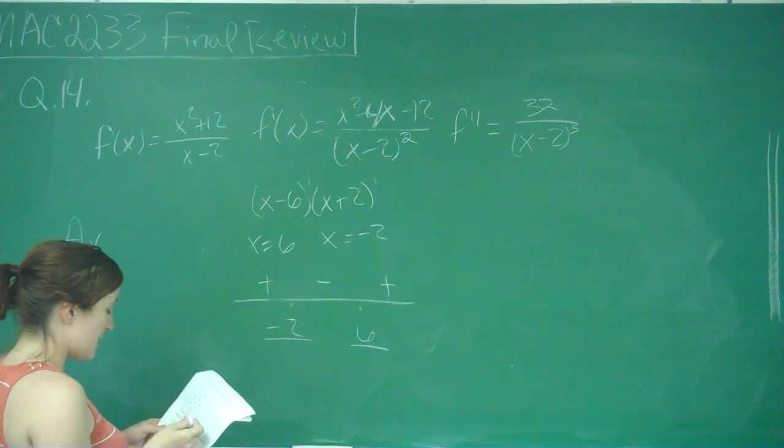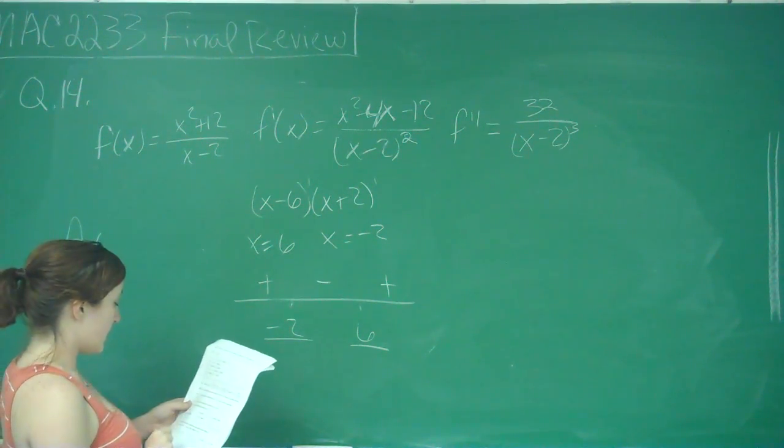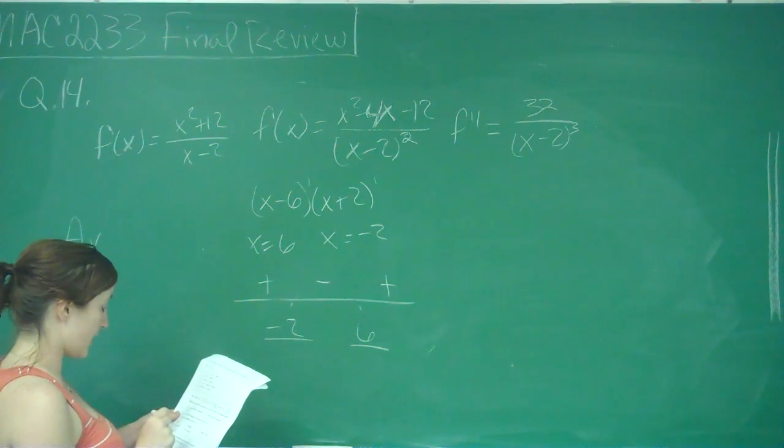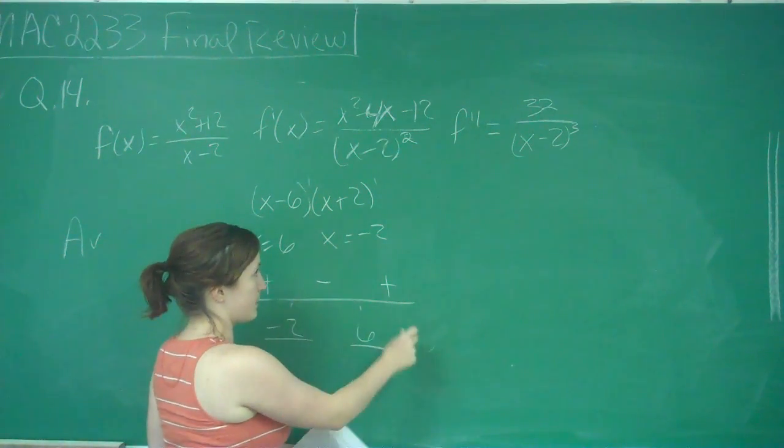B says f of x is both increasing and concave up from 6 to positive infinity, but we know that it's increasing from 6 to positive infinity.